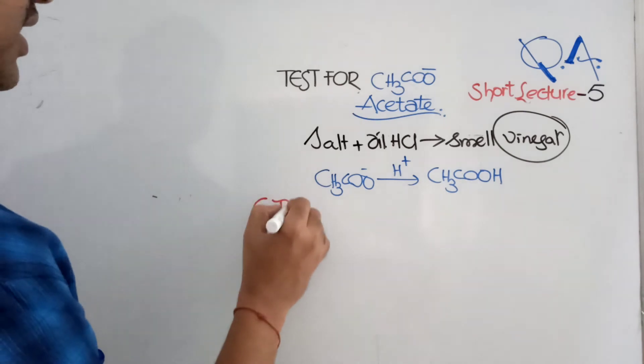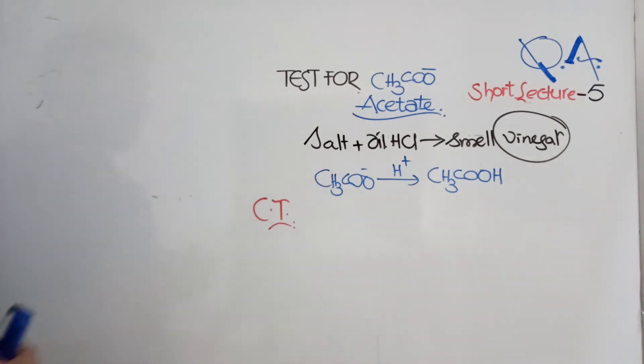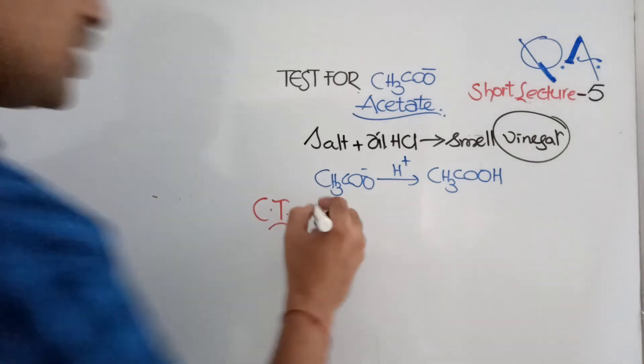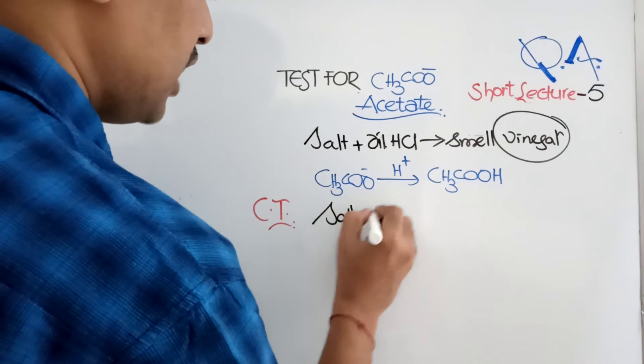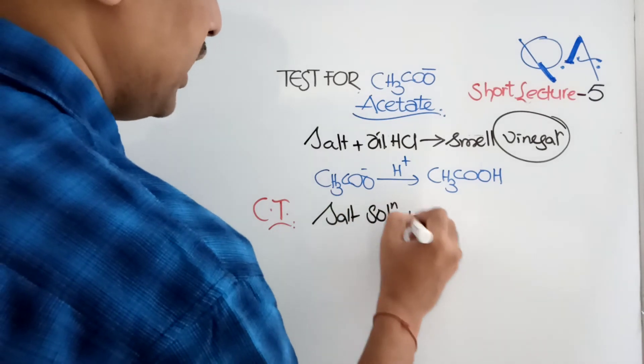How to confirm? Confirmation test. What is the confirmation test for this? It's very simple. Add ferric chloride. When ferric chloride solution is added to the salt solution, remember this point: salt solution only.